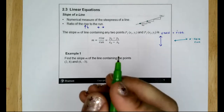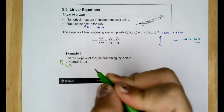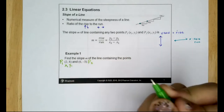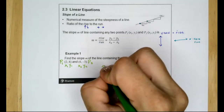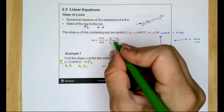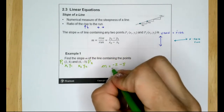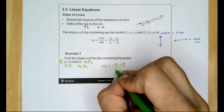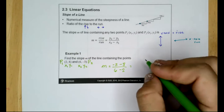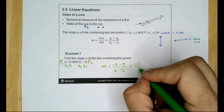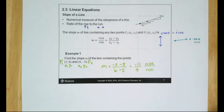You can use either point as point 1. Let's use the first one: P1 is (2, 8), so x1 = 2, y1 = 8. Point 2 is (6, -3), so x2 = 6, y2 = -3. So m equals y2 minus y1: negative 3 minus 8, over x2 minus x1: 6 minus 2. That becomes negative 11 over 4. So negative 11 is the rise and 4 is the run.